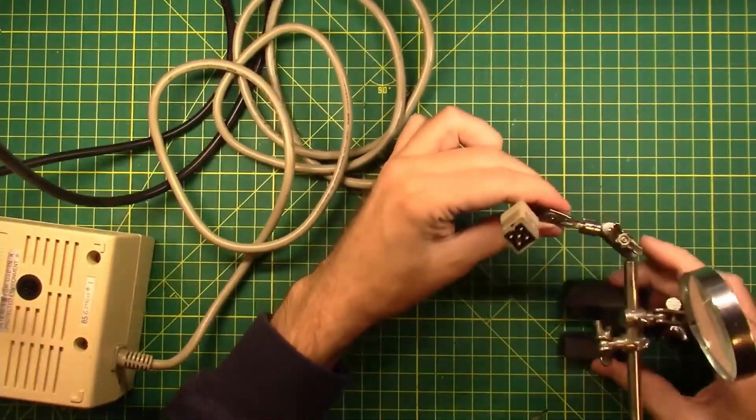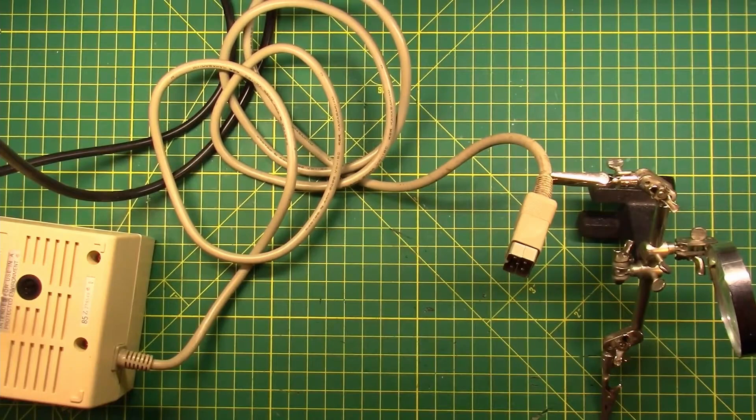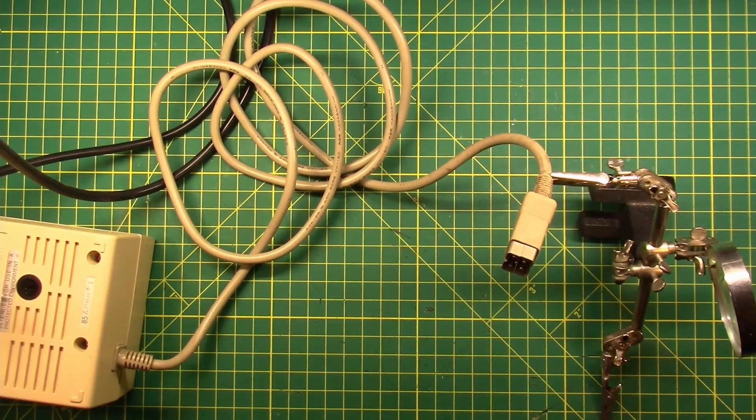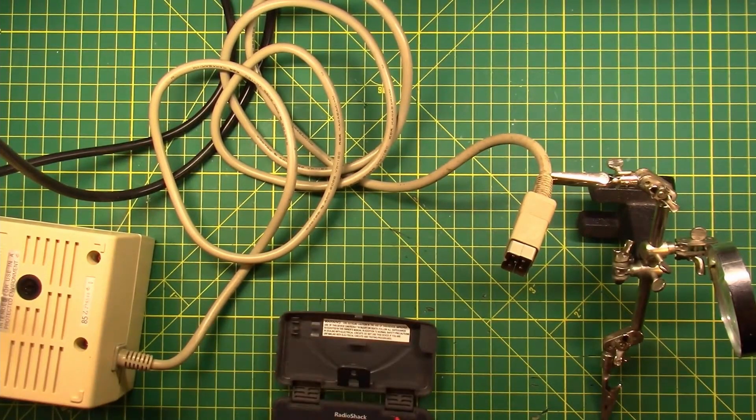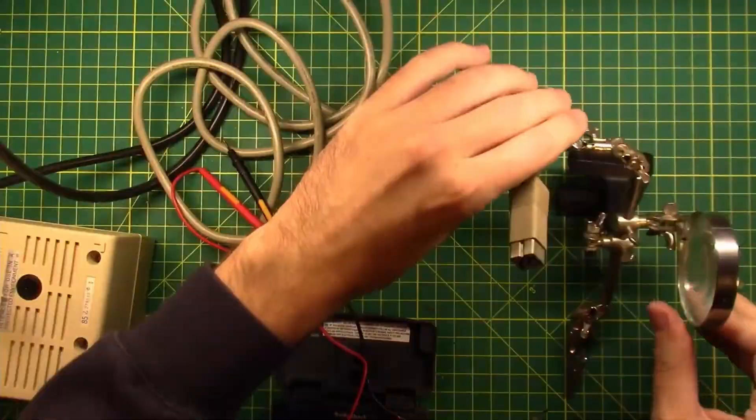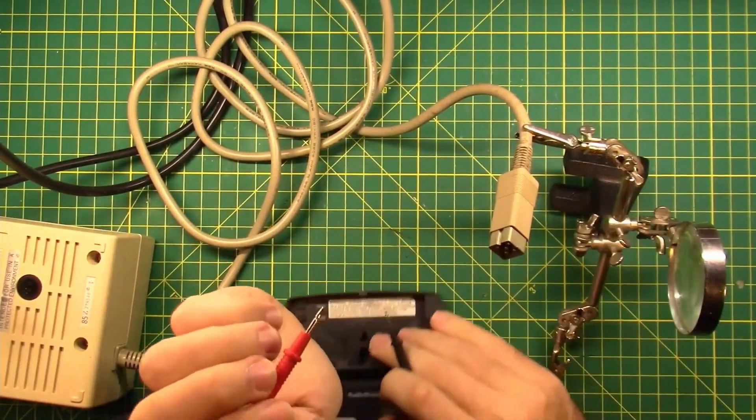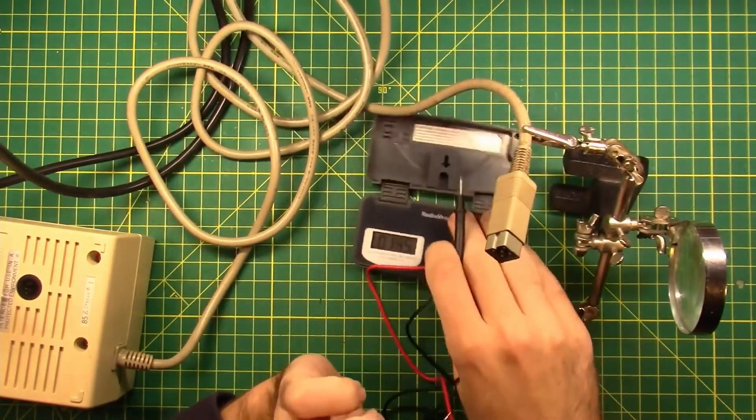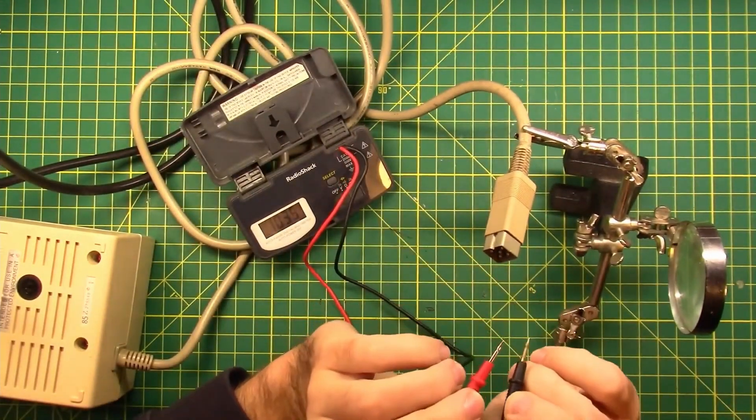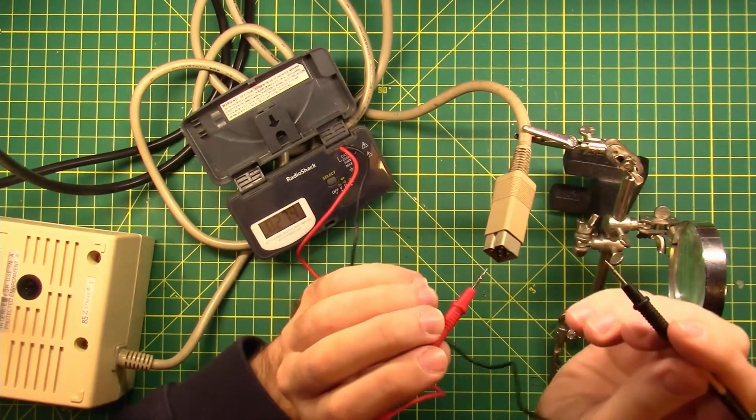On the back side of this power supply we have a pin-out diagram that says the center pin and the upper left is 9 volts AC. Let's check. That looked like 10.38 volts.